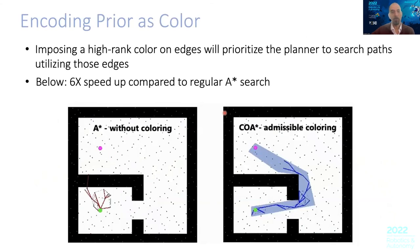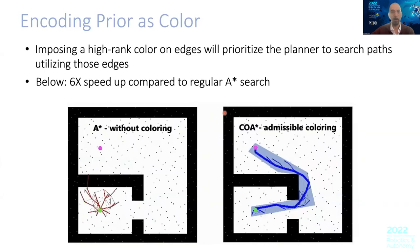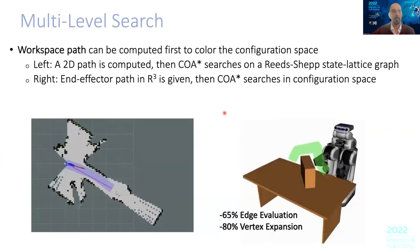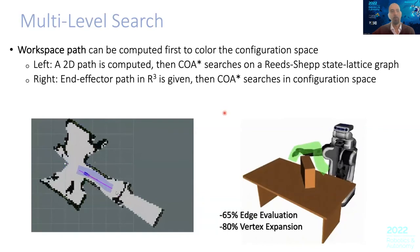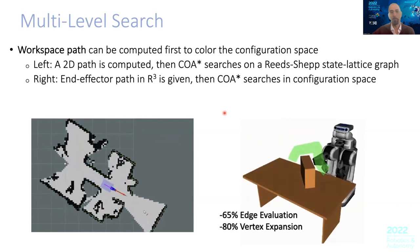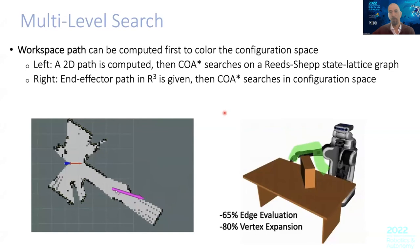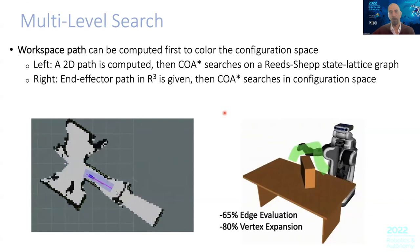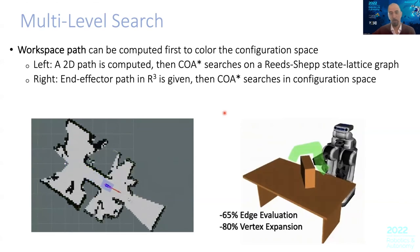Here is an example showing how you can use this information to guide the search in a particular environment. You can use this for multi-level search. Here's another example on the left showing the COA* (color-ordered A*) on a particular robotic vehicle, where prior information can be incorporated for planning. In this example, it's actually 65% and 80% better than doing the full search — much better in terms of fewer vertex expansions and edge evaluations.